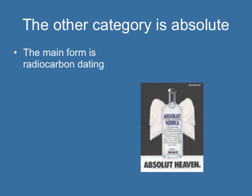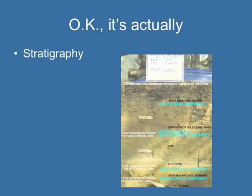The other main category of dating is absolute, and the main form is radiocarbon dating. Going back to relative dating — if you look at layers in a picture, let's say there's an artifact in the silver sand layer and another in just the sand layer. You don't know the exact dates, but you know their dates in relation to one another. The one on the bottom is probably older than the one on the top. That's why it's called stratigraphy — you're dating something in relation to something else.